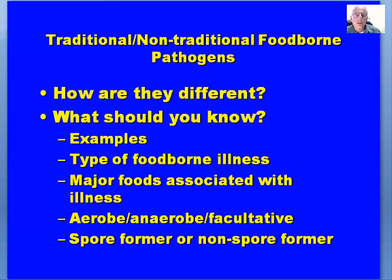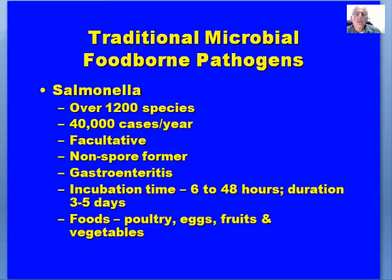Traditional microbial foodborne pathogens: one of the major ones is Salmonella. Interestingly, there are over 1,200 species of Salmonella and any one of these can cause a foodborne illness. It's a facultative microorganism, a non-spore former. It causes gastroenteritis. Incubation times can vary from six to 48 hours, and duration, depending on severity, can be three to five days. You should know that it's a facultative non-spore former.